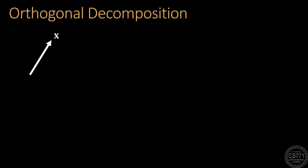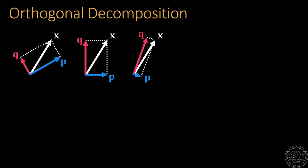Orthogonally decomposing a vector X simply means coming up with two vectors P and Q that are perpendicular to each other and that sum up to X. There are infinitely many possible orthogonal decompositions of a vector, and the one we choose depends on our application.